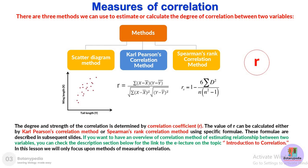The degree and strength of correlation is determined by the correlation coefficient, which is denoted by the small letter r. The value of r can be calculated either by Carl Pearson correlation method or Spearman rank correlation method using specific formulae. In this lesson we will only focus upon methods of measuring correlation.